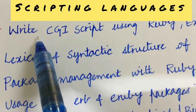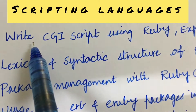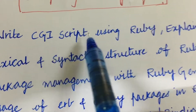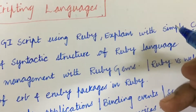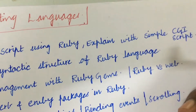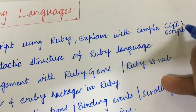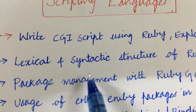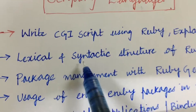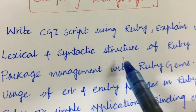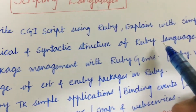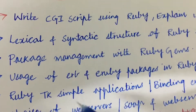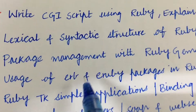The first and foremost gunshot question I would like you all to know is: write a CGI script using Ruby and explain with a simple CGI script — this is a very important gunshot question. Later, the lexical and syntactic structure of the Ruby language is also one of the very important questions, asked several times.